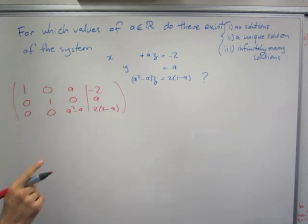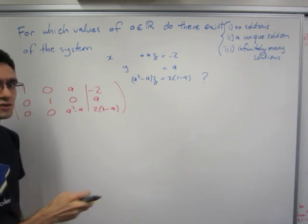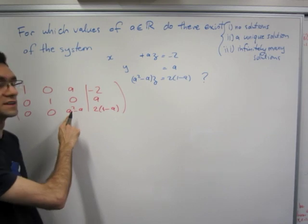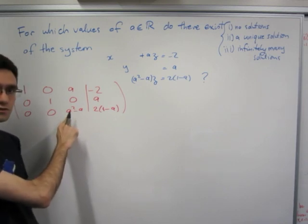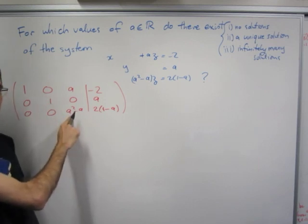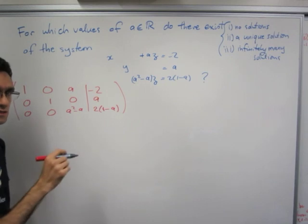Now we must, importantly we must remember that we can't ever divide through by 0. So for instance, if a squared minus a were 0, we couldn't divide through to get a 1. This is important to remember, so when we break down into cases we need to consider this.